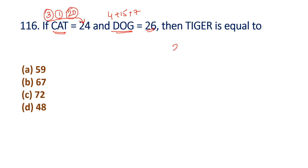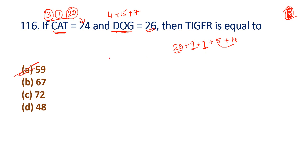Tiger is coded: T=20, I=9, G=7, E=5, R=18. Adding: 18+5=23, 23+7=30, 30+20=50, 50+9=59. So option C is the answer.